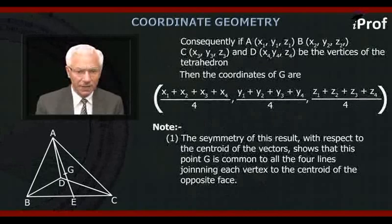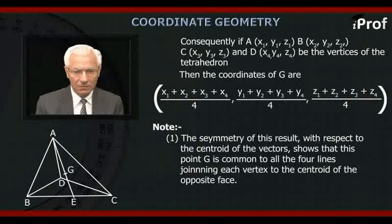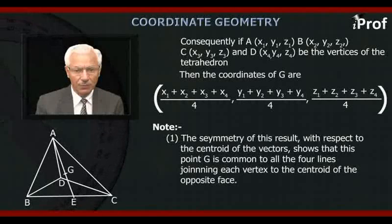Consequently, if A X1, Y1, Z1, B with coordinates X2, Y2, Z2, C X3, Y3, Z3, and D X4, Y4, Z4 be the coordinates of the tetrahedron,